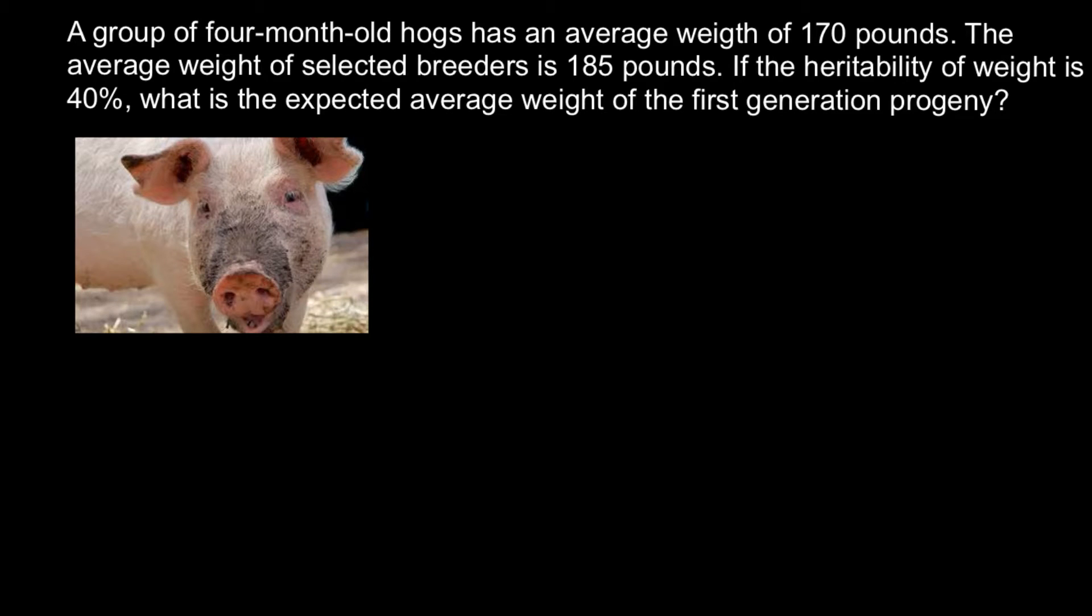Hi! Imagine that you are a farmer and you want to improve your stock. So you have a group of 4-month-old hogs that has an average weight of 170 pounds. The average weight of selected breeders is 185 pounds. If the heritability of weight is 40%, what is the expected average weight of the first generation progeny?